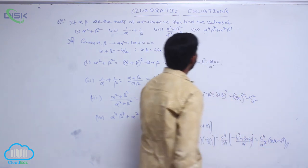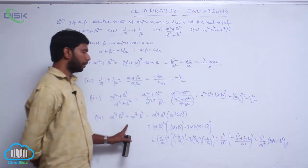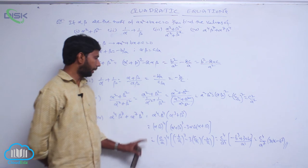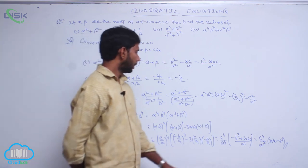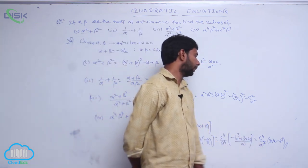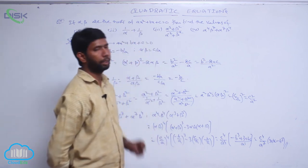Therefore, the value of alpha power 4 beta power 7 plus alpha power 7 beta power 4 is equal to c power 4 by a power 7 into (3abc minus b cubed).